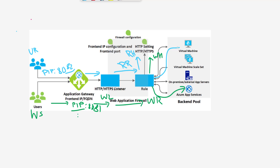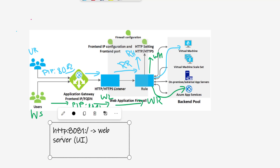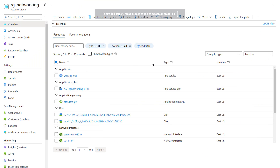To summarize: if traffic comes in on port 8081, we display the web application UI; if traffic comes in on port 8082, we display the Windows-based reporting server result. This is what we're going to configure in the Application Gateway. In the Azure portal, we already have the resources configured — a web application hosted with default configuration.